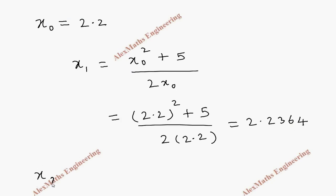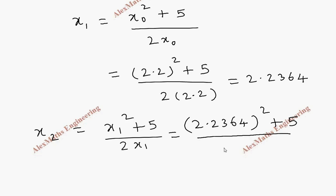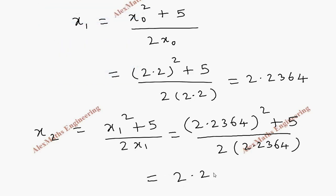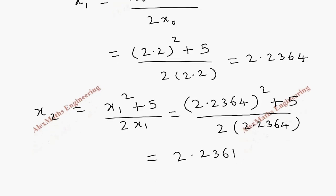Now taking this as x1, let's find x2. That is x1 square plus 5 divided by 2x1. So it is 2.2364 whole square plus 5 whole divided by 2 into 2.2364. Now again using calculator, let's take 2.2364 square value, then plus 5 divided by 2 into 2.2364. So totally, it is 2.2361 after rounding off to 4 decimal places.